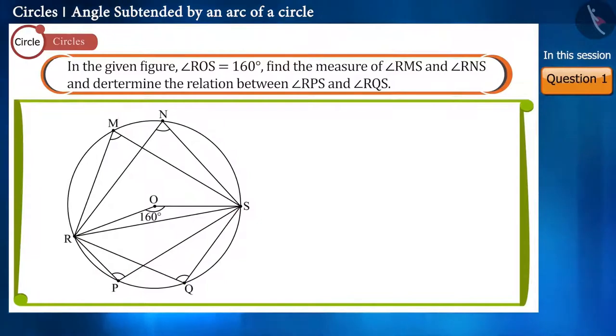Friends, observe the figure carefully. Here, the angle ROS is the angle subtended by the arc RS to the center O.